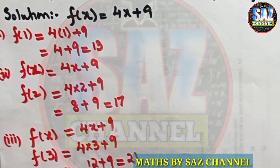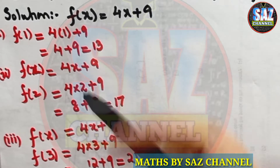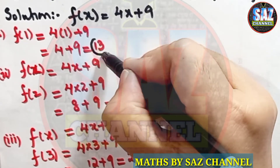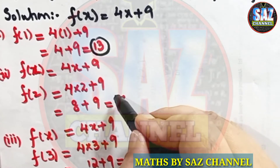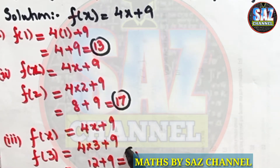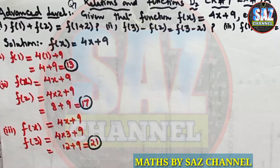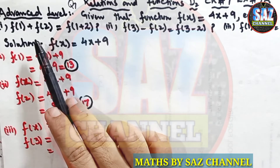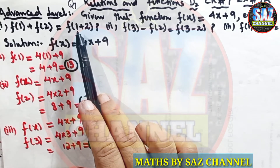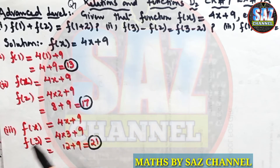Learn to make your calculations easier, because these questions will mostly come in paper 1 where we are not allowed to use calculators. Now let's look at the values and the first requirement: we have to decide whether f(1) + f(2) equals f(1+2).